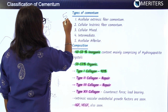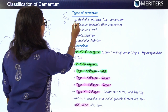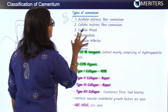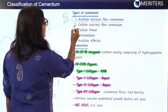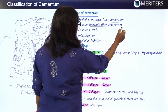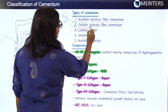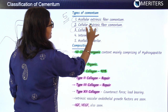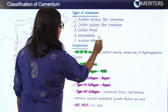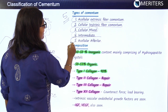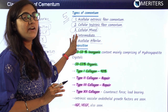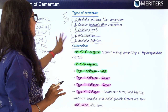There are basically five types of cementum: first, acellular extrinsic fiber cementum; second, cellular intrinsic fiber cementum; third, cellular mixed cementum, which may have both extrinsic and intrinsic fibers; fourth, intermediate cementum; and fifth, acellular afibrillar cementum.